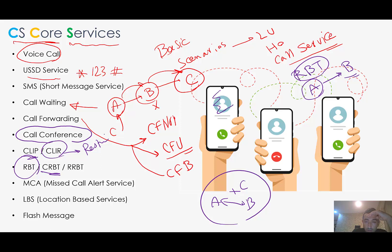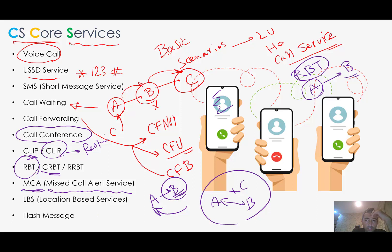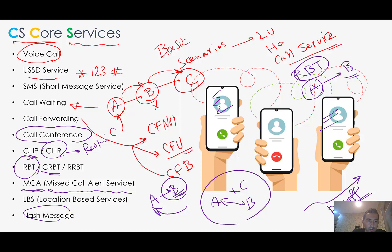We also have CRBT or MRBT — Multimedia Ring Back Tone — where when you call B, some multimedia content is shown to you. MCA means Missed Call Alert Service: when A calls B and B is not reachable, an SMS is sent to A informing them that B is not reachable. Some location-based services also exist — for example, if you go to a location where a promotion is offered, you are informed by flash message, SMS, or something else.